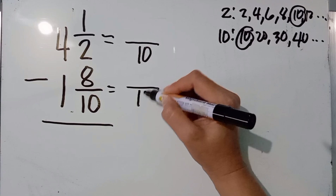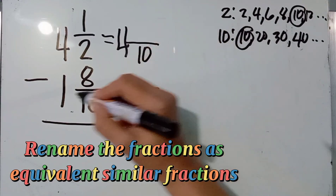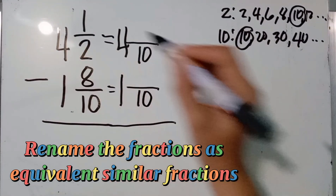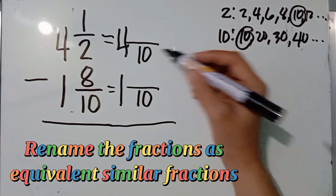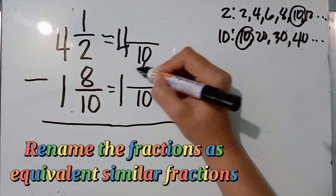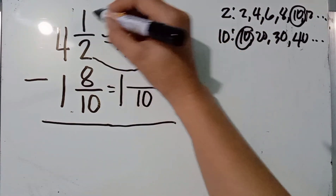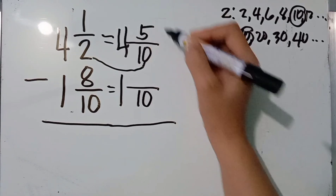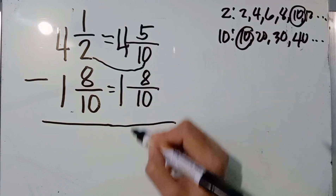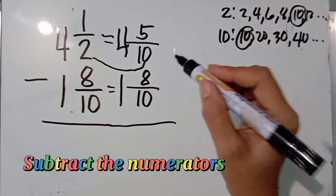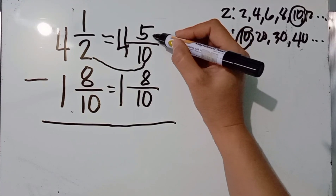Write the LCD of 10 and copy the whole numbers 4 and 1. Divide the LCD by the original denominators: 10 divided by 2 is 5, then 5 times 1 equals 5. 10 divided by 10 is 1, then 1 times 8 equals 8. Now we are going to subtract the numerators: 5 minus 8.